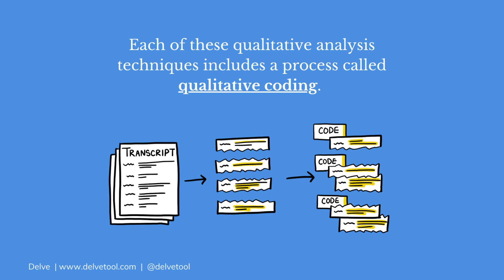Qualitative coding is a common tool that allows you to interpret, organize, analyze, and structure your qualitative data for your final research report or narrative.